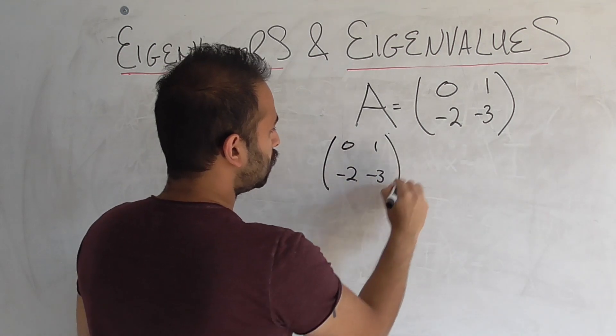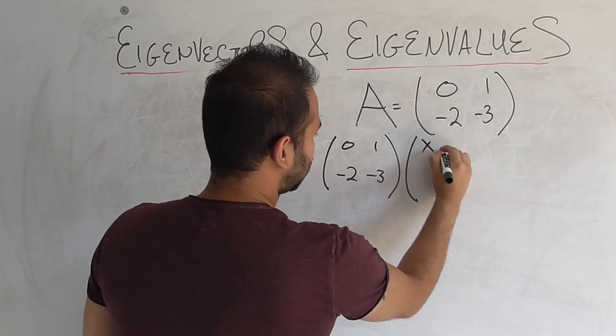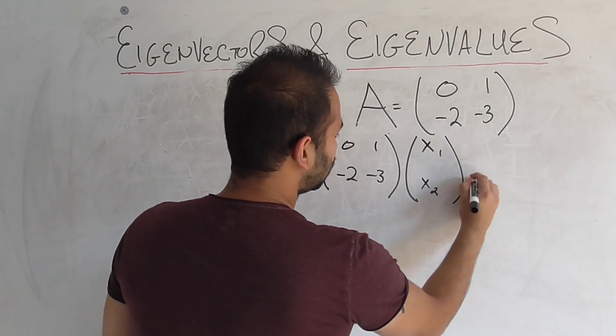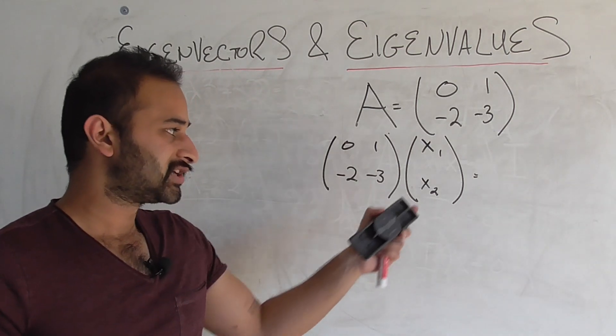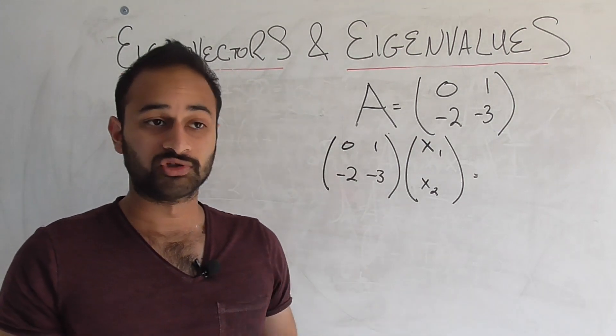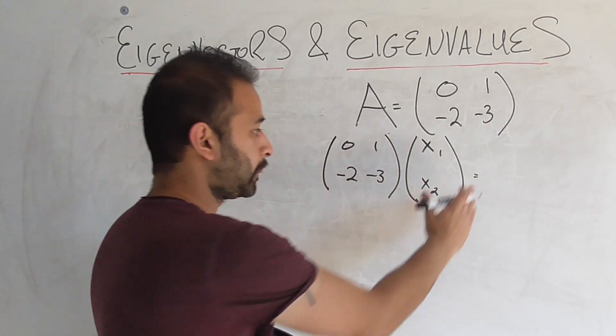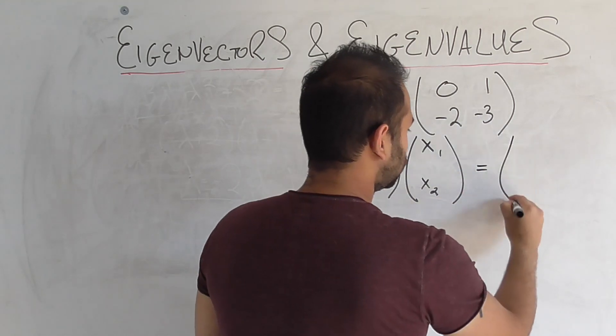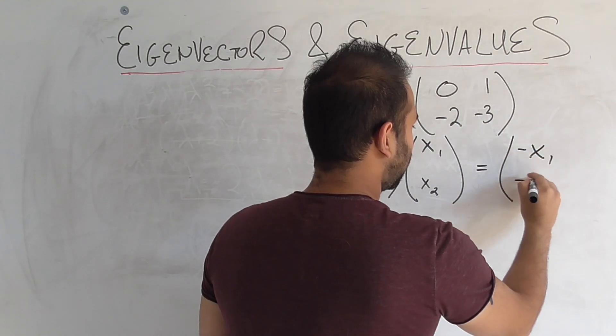times some vector x1, x2, we don't know that yet, is equal to lambda times that same vector. In this case, we're using lambda as negative 1. So if we do negative 1, we get minus x1 and minus x2.